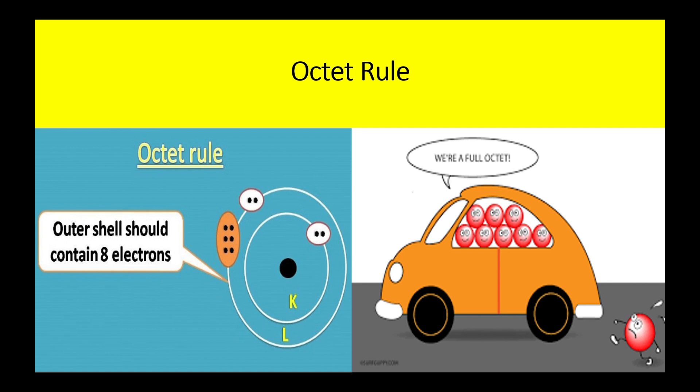To remember the octet rule, note that 'octa' always means 8 — like an octopus with 8 arms, or an octagon with 8 sides. The octet rule states that for stability, atoms should have 8 electrons in their outermost shell. If an atom has 8 electrons it is very stable and unreactive, but if it doesn't have 8 electrons it will react with other elements to achieve a complete outermost shell.